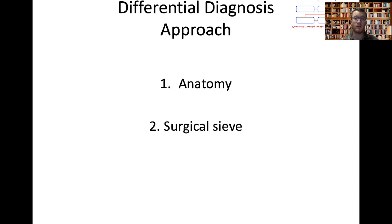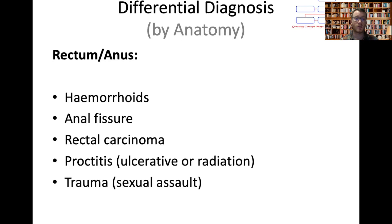There are two approaches: we can use the anatomical routes or we can use a surgical sieve. Via anatomy, so bleeding per rectum — rectal and anal causes.